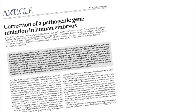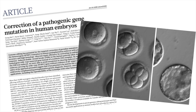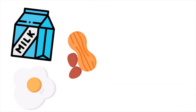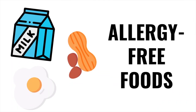CRISPR has made many successful achievements. For instance, in 2017, scientists were able to successfully correct a mutation which causes a type of heart disease defect in an embryo. There's also great potential for future applications, like creating allergy-free foods. The allergic reactions that many individuals face against common foods like eggs, peanuts, or milk are due to the presence of certain proteins, so if we could edit the genes which encode these proteins safely, the creation of allergy-free foods would be possible.